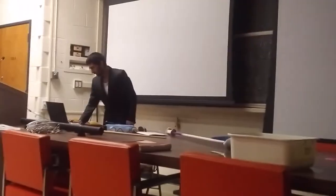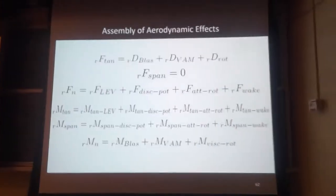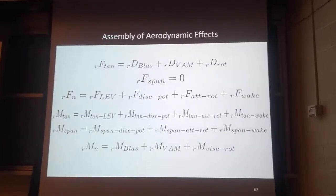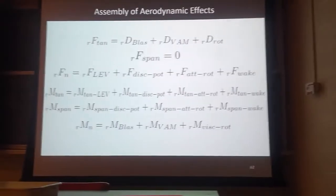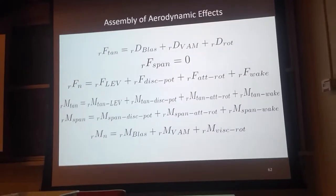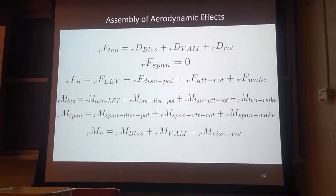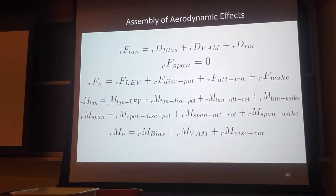To conclude, we assembled the various effects that we talked about the previous week to get the shear. We add up the flat plate drag for steady flow, the viscous apparent mass, and the rotational drag. We don't account for spanwise flow, and so our force in the spanwise direction is zero.